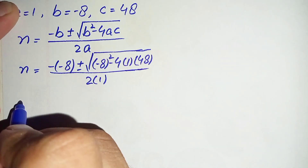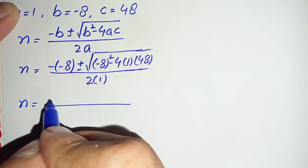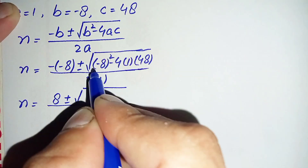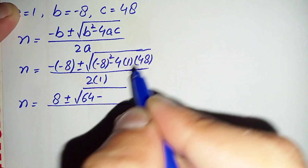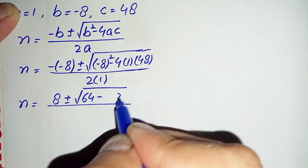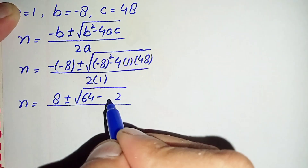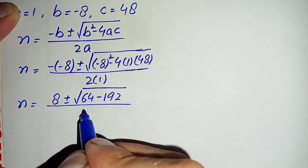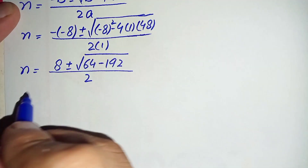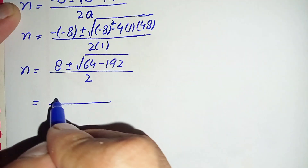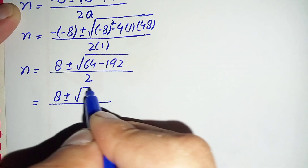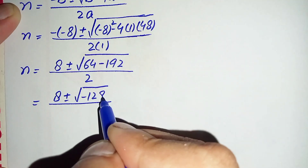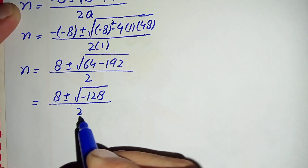Simplifying: negative times negative gives positive 8, plus or minus the square root of 64 minus 192, divided by 2. Here negative 8 squared is 64, and 4 times 1 times 48 is 192. So we get 8 plus or minus the square root of 64 minus 192, which is negative 128, divided by 2.